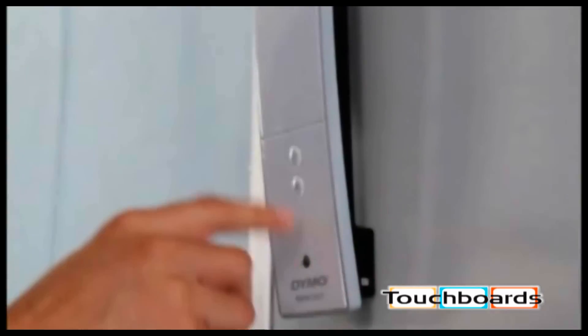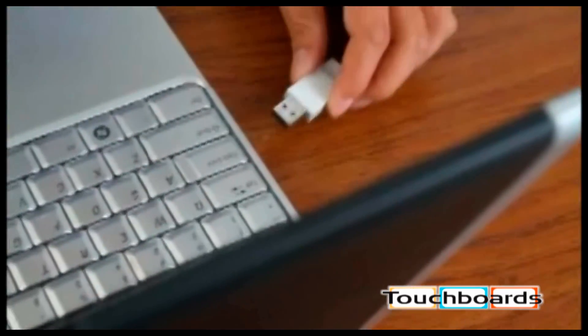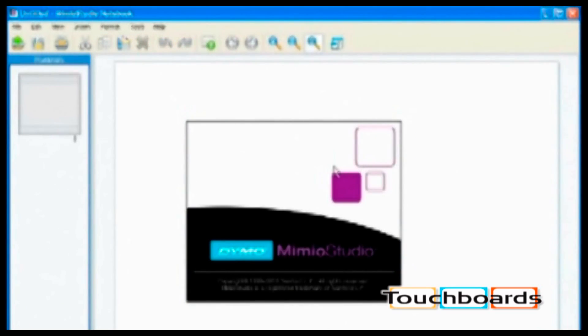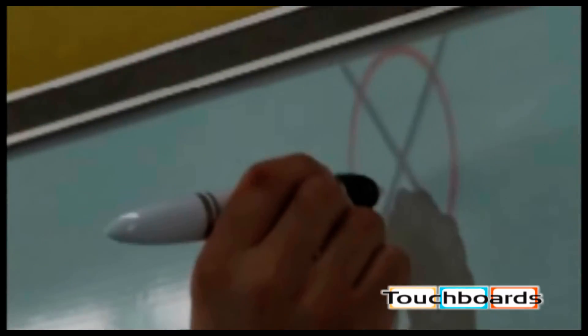Simply place the MimeoTeach bar onto your classroom whiteboard. Plug in the MimeoHub wireless receiver and launch the MimeoStudio software. Push the calibration button on the bar and the software will lead you through the process.